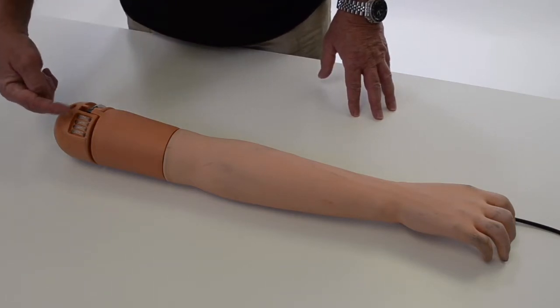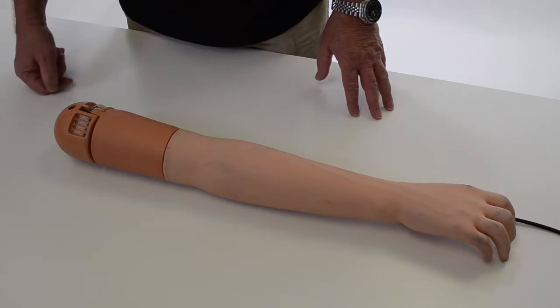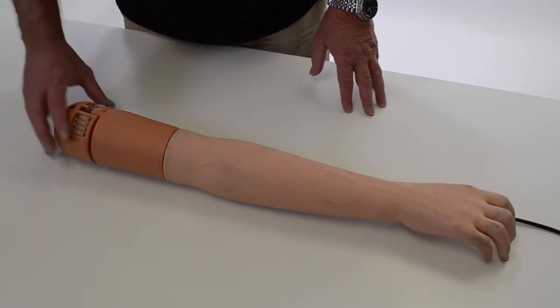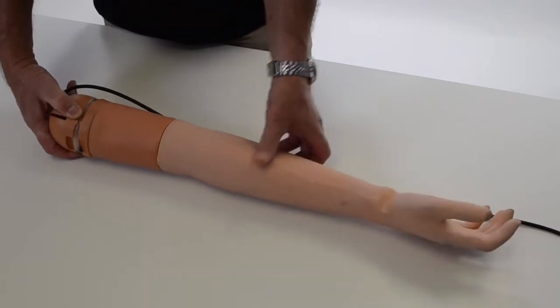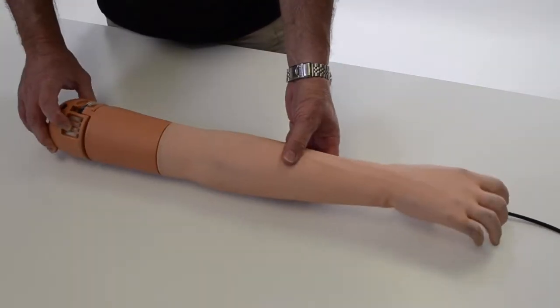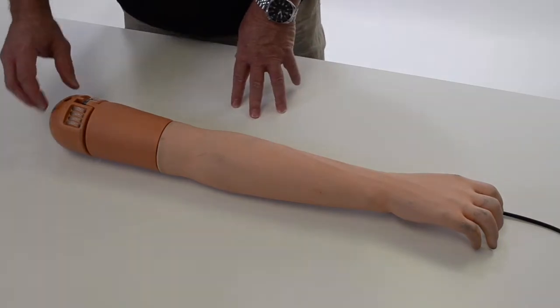So now we have the IV arm off. It's a four-channel arm: three of these channels are veins, one is an artery. The artery is the radial artery.